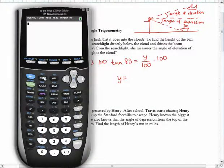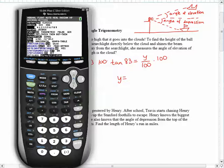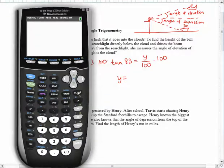First, I have to make sure that I am in degree mode. And then I can type in 100 times the tangent of 83. And so we get 814.434 feet.